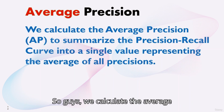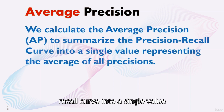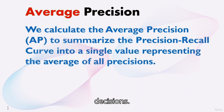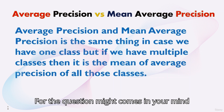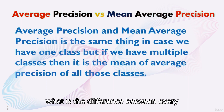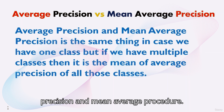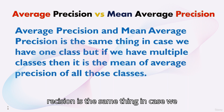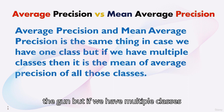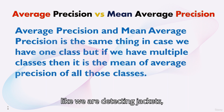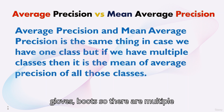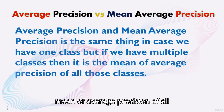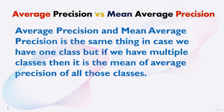We calculate the average precision to summarize the precision-recall curve into a single value representing the average of all precisions. You might wonder: what is the difference between average precision and mean average precision? Average precision and mean average precision are the same thing when we have one class, like only detecting a gun. But if we have multiple classes — such as detecting jackets, gloves, and boots — then mean average precision is the mean of the average precision of all those classes.